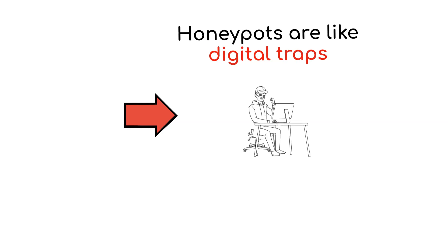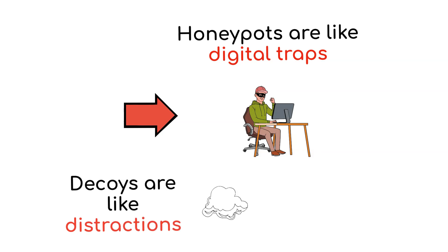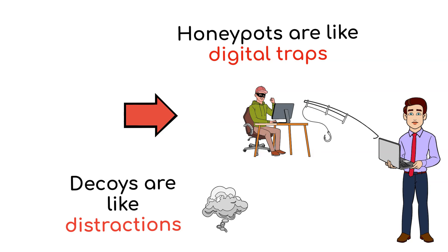So, in simple terms, honeypots are like digital traps that lure hackers in, while decoys are like distractions that keep hackers busy, allowing cybersecurity experts to catch them or protect the real digital assets.